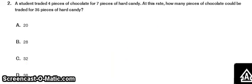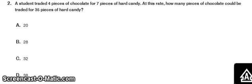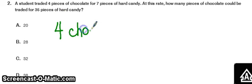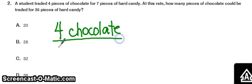Number 2: a student traded 4 pieces of chocolate for 7 pieces of hard candy. At this rate, how many pieces of chocolate would be traded for 35 pieces of hard candy? I've seen on some of your posts that some of you are confused with proportions and don't put the numbers in the right places. I insist that you put the words in there with the numbers — that will help you put those numbers in the correct place. We've got 4 pieces of chocolate and 7 pieces of hard candy.